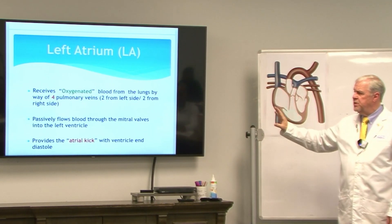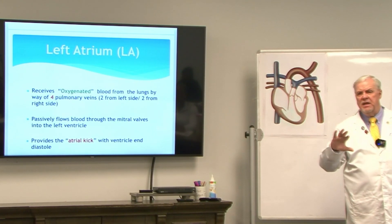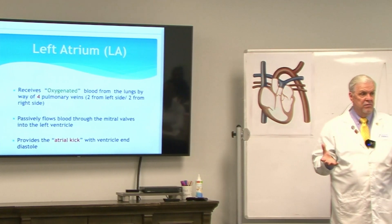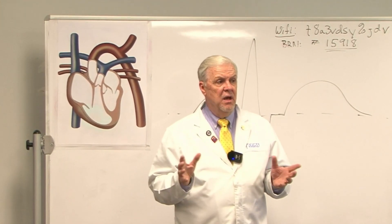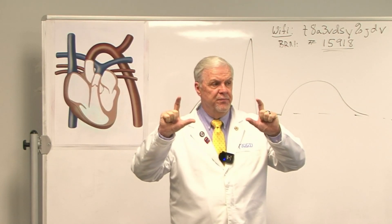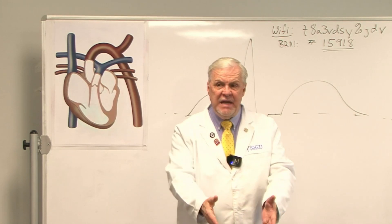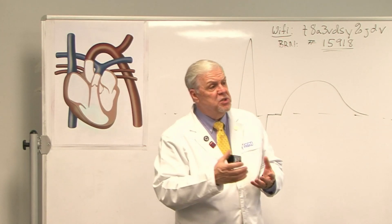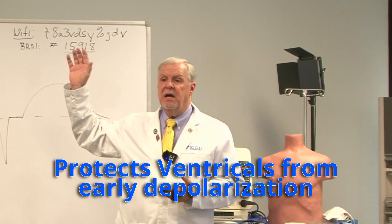The atrial kick provides an extra 15%, give or take, of blood dropped into the ventricles just before they fire. The other 85% enters passively — as pressure builds in the atrium, it forces the valves open and blood pours into the ventricles. That's passive blood flow.